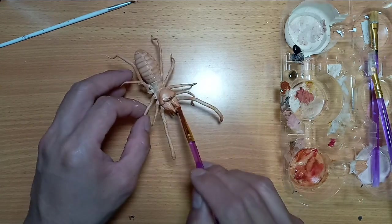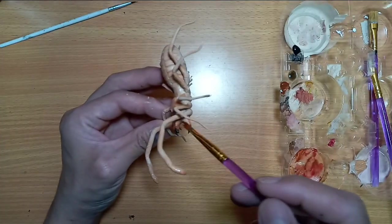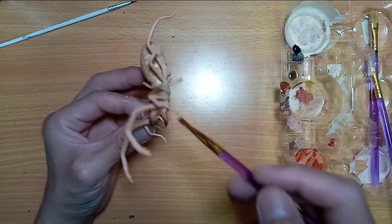And I paint the tips of its jaws with a bit of darker combination using raw umber, black, and blue.